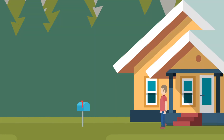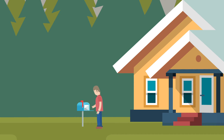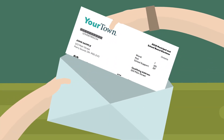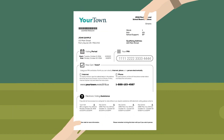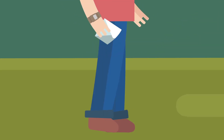Before the election, you will receive a voter instruction letter with your personal voting credentials and instructions on how to vote using the internet or the phone. This letter will be delivered by Canada Post to your regular mailbox. Remember that this document belongs only to you and must be kept private and safe.